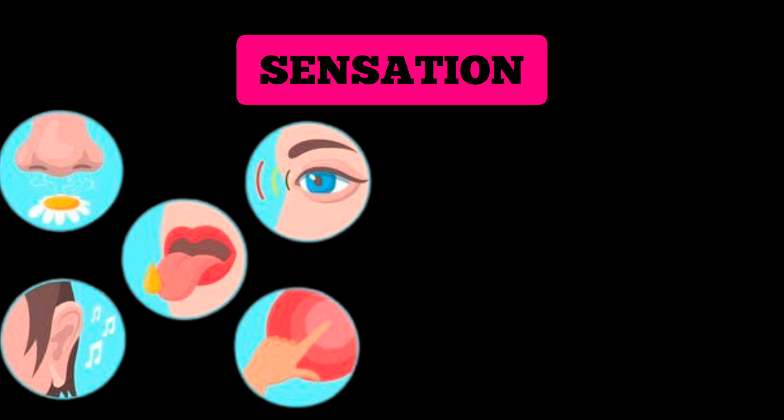Our body has five sense organs: eyes, nose, tongue, skin, and ears. They do the feeling of vision, smell, taste, touch, and hearing.